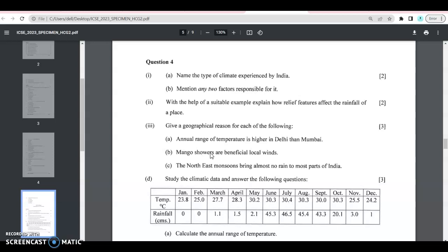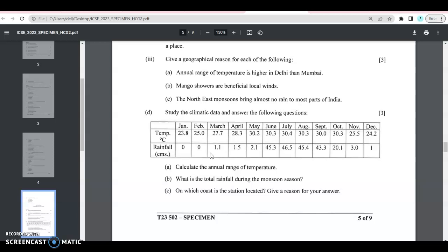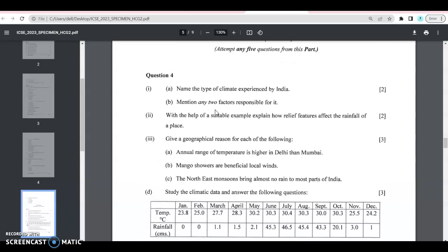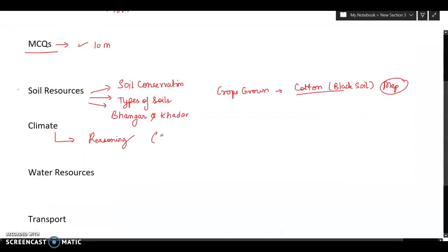One question that is asked every year is regarding the climatic data. They will give you this data of temperature, rainfall, and the months, right? And then you will have to calculate the annual range of temperature or the annual rainfall, the difference between the temperature when the temperature is the highest and the lowest. So these are the questions that will be asked. Which coast is the station located? Refer to the data given and answer it accordingly. Then factors responsible for the climate of India.